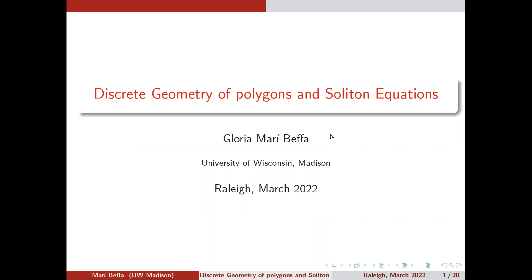I want to talk about discrete geometry of polygons and soliton equations. I'm a Dean, and that's a big nightmare — so this is what keeps me sane. I'm going to start with examples, spending some time giving you a sense of what I'm doing and why, rather than just a lot of definitions.